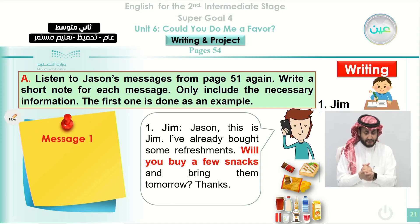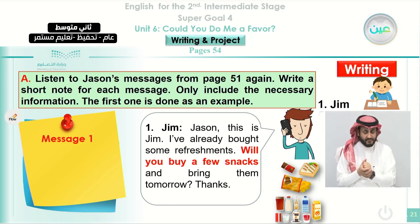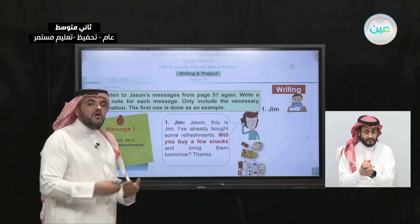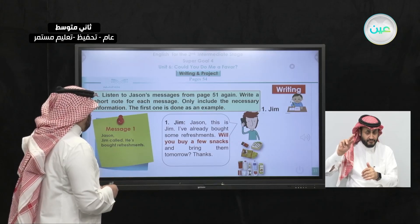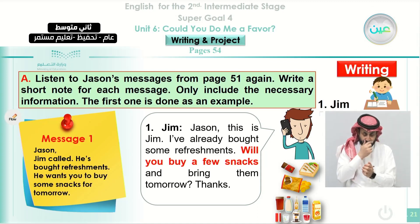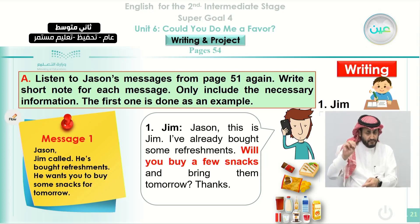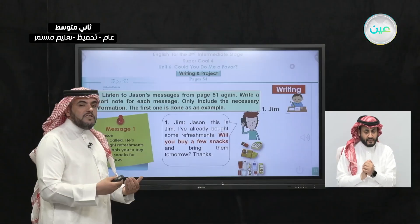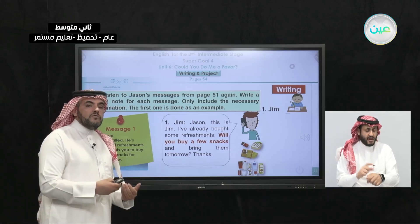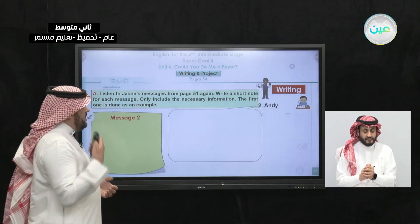He's asking his friend to bring some snacks — this is the most important piece of information. We start with 'who': writing 'Jim called'. Now we are telling who called — that is Jim. So in the first sentence, 'Jim called.' What does he want? He has bought some refreshments, and he wants his friend Jason to buy some snacks for tomorrow. 'For tomorrow' answers 'when'. We answered who — Jim; what — he wants his friend to bring some snacks; and when — tomorrow.